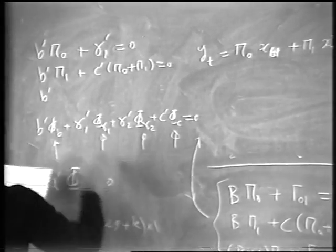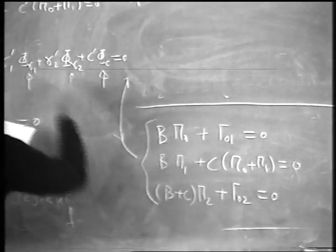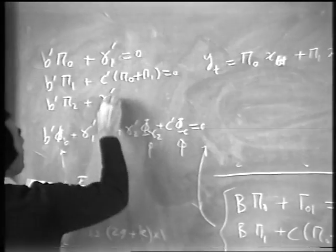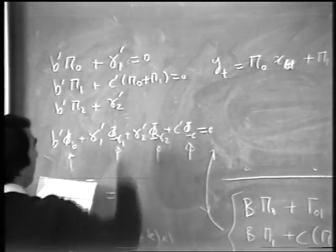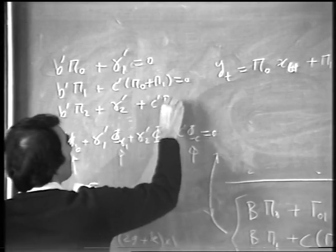I get the last one, B prime pi 2. That becomes gamma prime 2 plus C prime pi 2.